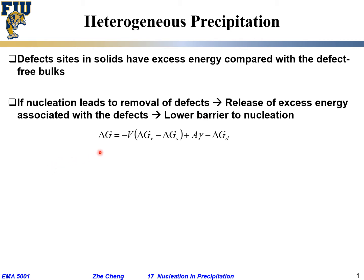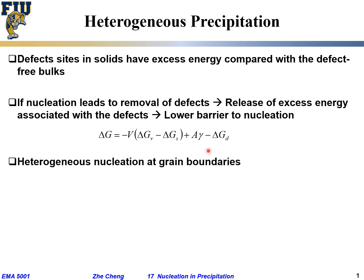We write ΔG, the free energy change for the nucleation process, with several terms: V times the driving force (the volume term), minus ΔG_s (the strain energy), plus an interfacial energy barrier term, but also helped by a negative term ΔG_d for certain types of defects. Whether I'm eliminating part of a grain boundary or part of a dislocation, I'm releasing some energy associated with the defect — that's the negative sign helping me.